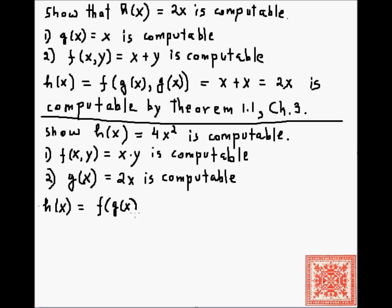h(x) equals the composition of f and 2 g's. This is equal to 2x times 2x, and that gives us 4x squared. And again, since we're composing two computable functions, then h(x) by theorem 1.1 chapter 3 is also computable.